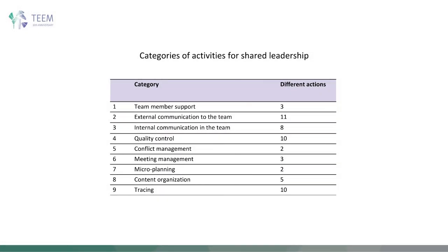Grouping the different activities by categories, nine categories are obtained: team member support — helping the rest of the team members in tasks; external communication to the team, with the teacher, with other work teams, and with external entities or people, including external diffusion of the team's work; internal communication within the team; quality control actions to prevent and resolve conflicts between members; actions to organize, manage meetings, and generate evidence; micro-planning implying temporary and progressive planning; organization and generation of intermediate content and final results; and supervisory actions — follow-up of team planning and individual responsibilities.